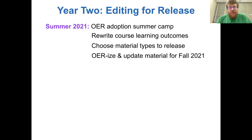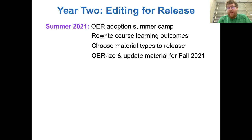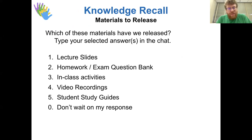When it came time to release the project, we needed to edit the stuff we had developed during the previous academic year. In summer 2021, we got involved with the OER adoption summer camp again through the library. We needed to rewrite our course learning outcomes to make sure they aligned with all these new activities, choose what materials we were actually going to release, make everything OER accessible, and update any material we could use for the fall.